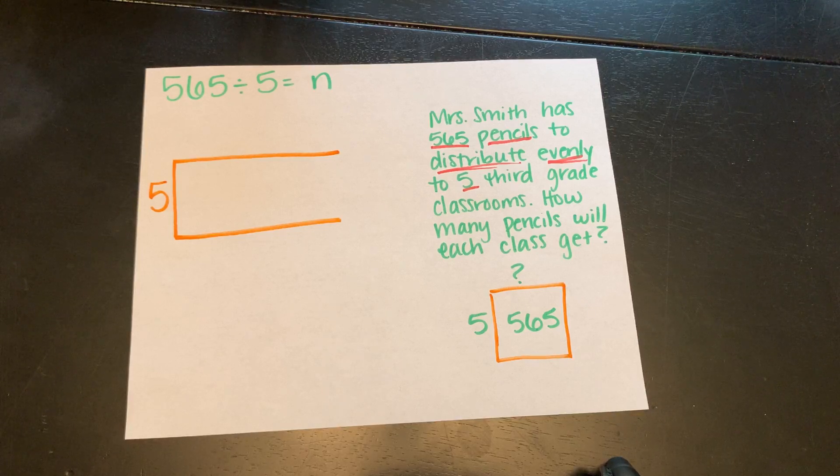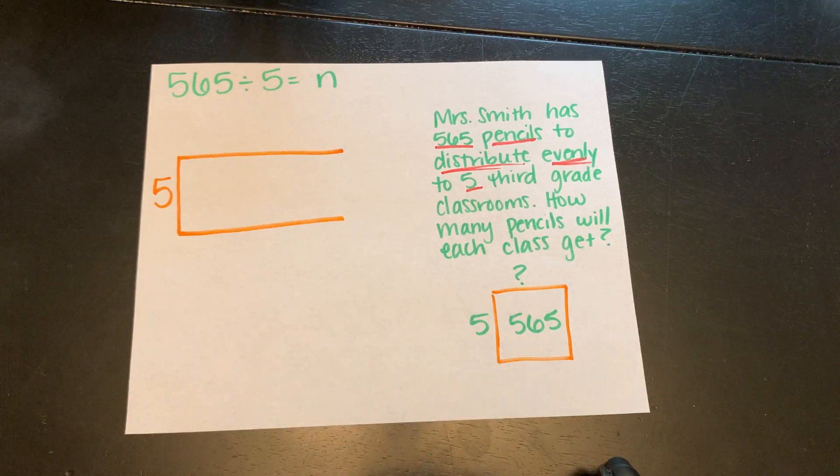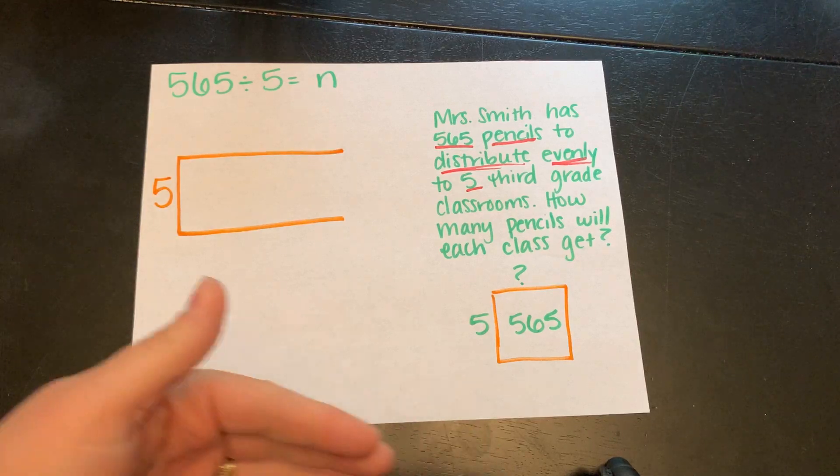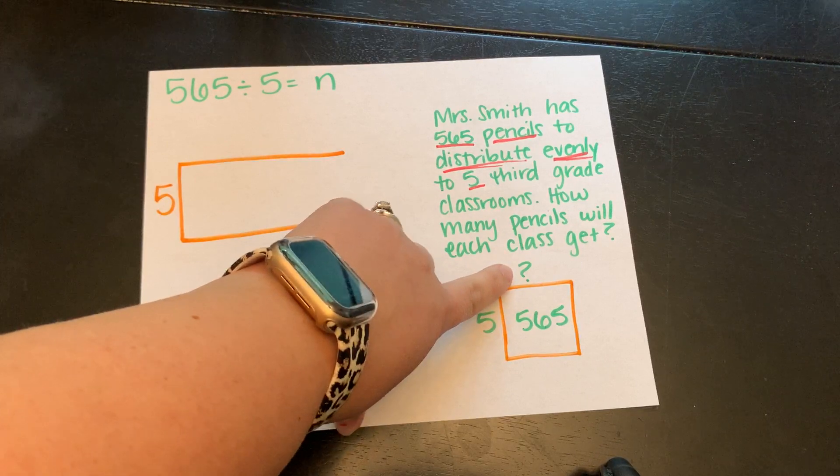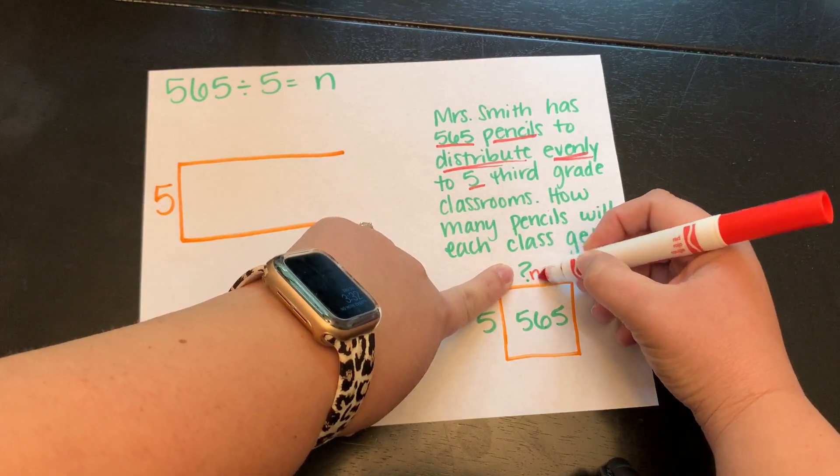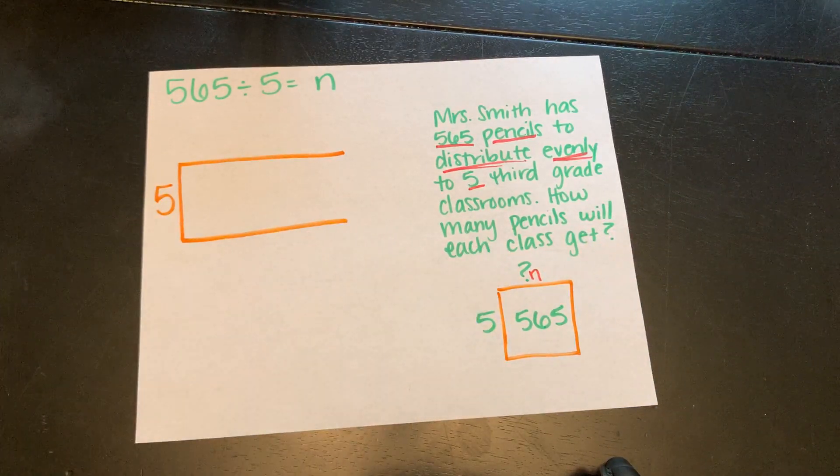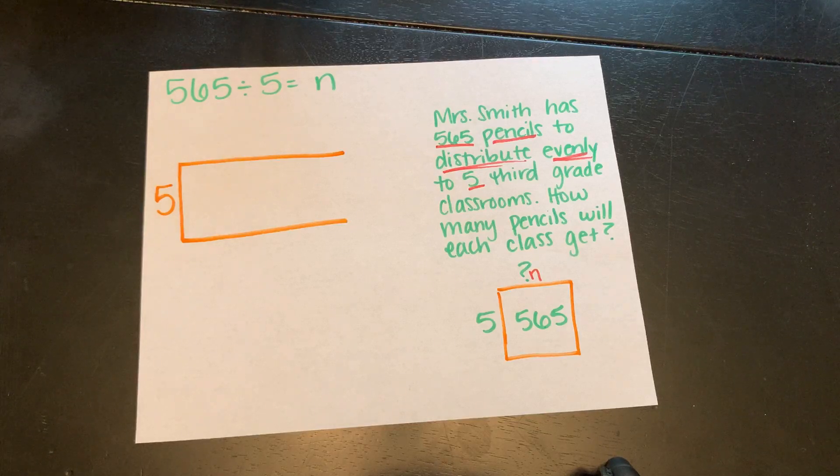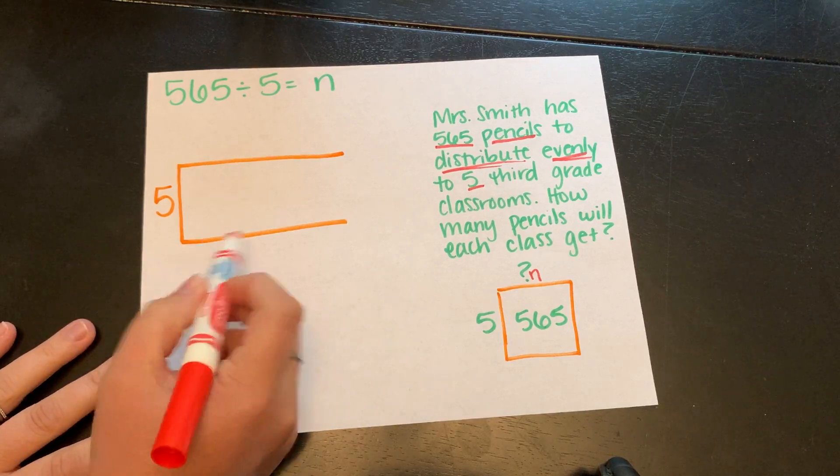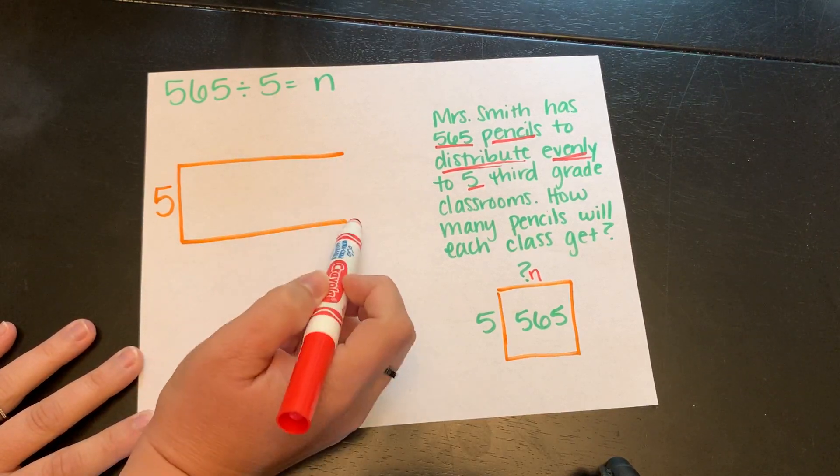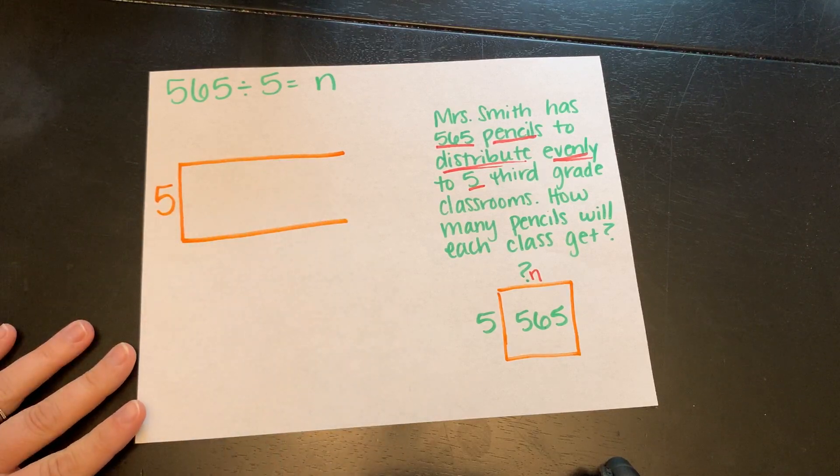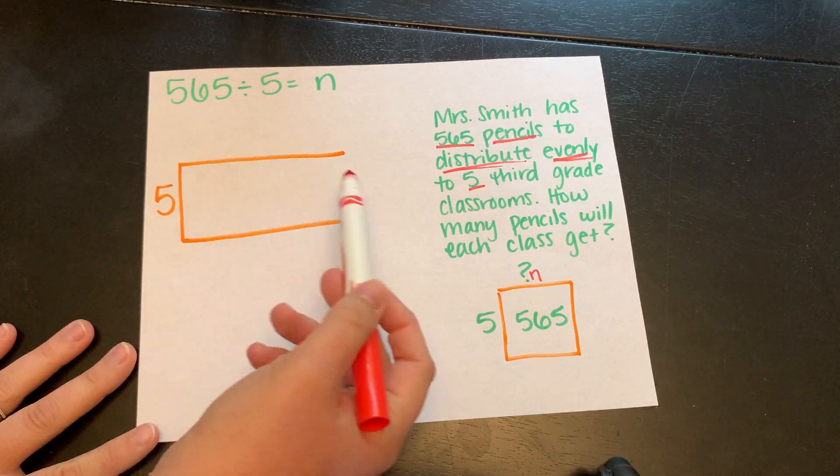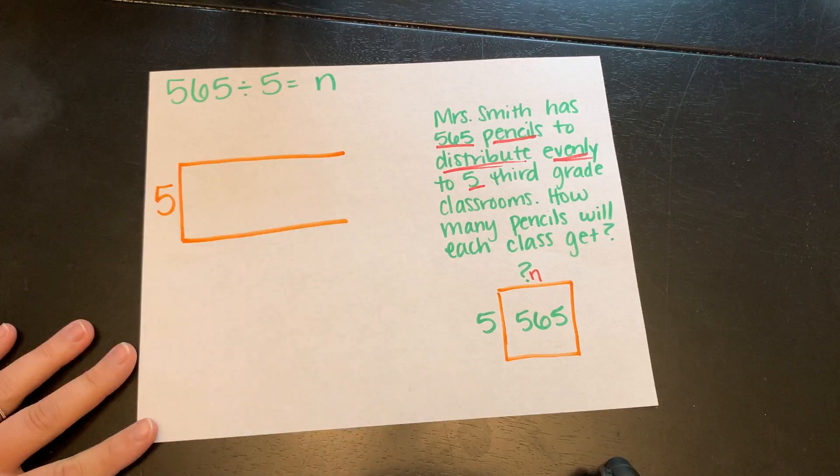We have a total of 565 pencils, which is what we start with. We're distributing them evenly or putting them into groups of five. This question mark, which could also be represented by our N, represents the unknown number. What is the amount of pencils that will go to each class? We have our array started over here, and the reason why I haven't closed my array just yet is because depending on what numbers I choose to get my partial quotients, it may be longer or shorter. I just kind of wait until the end to close my array.